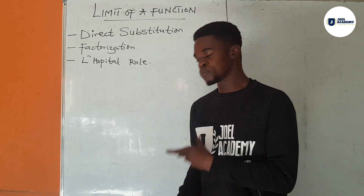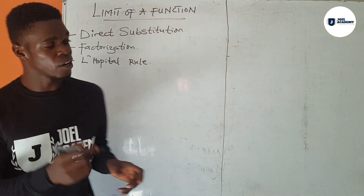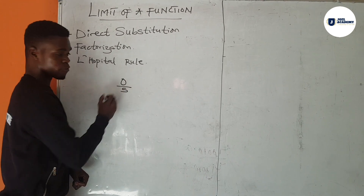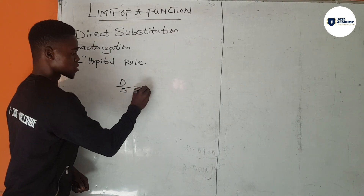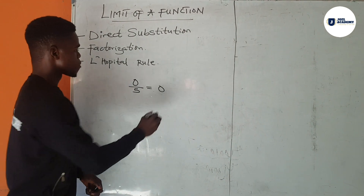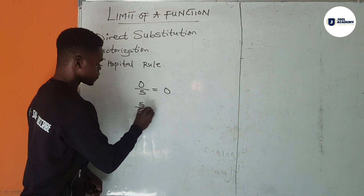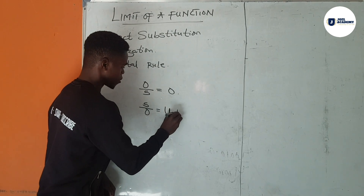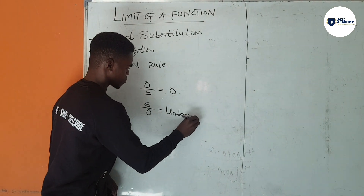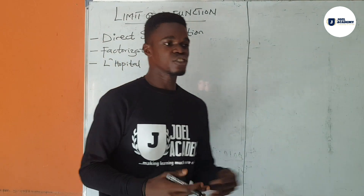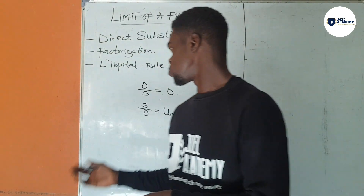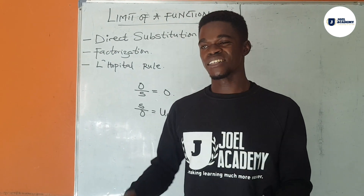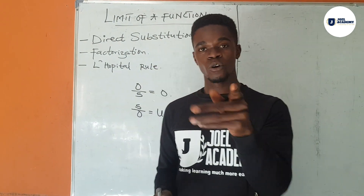When there is a situation where the answer would be undefined, here is a very simple example. When you have 0 divided by 5, your answer is 0 — it is that simple. But when you have 5 divided by 0, your answer is undefined. You can check that in your calculator — just try 5 divided by 0 and you will see a math error, because it is undefined, it is almost close to infinity.